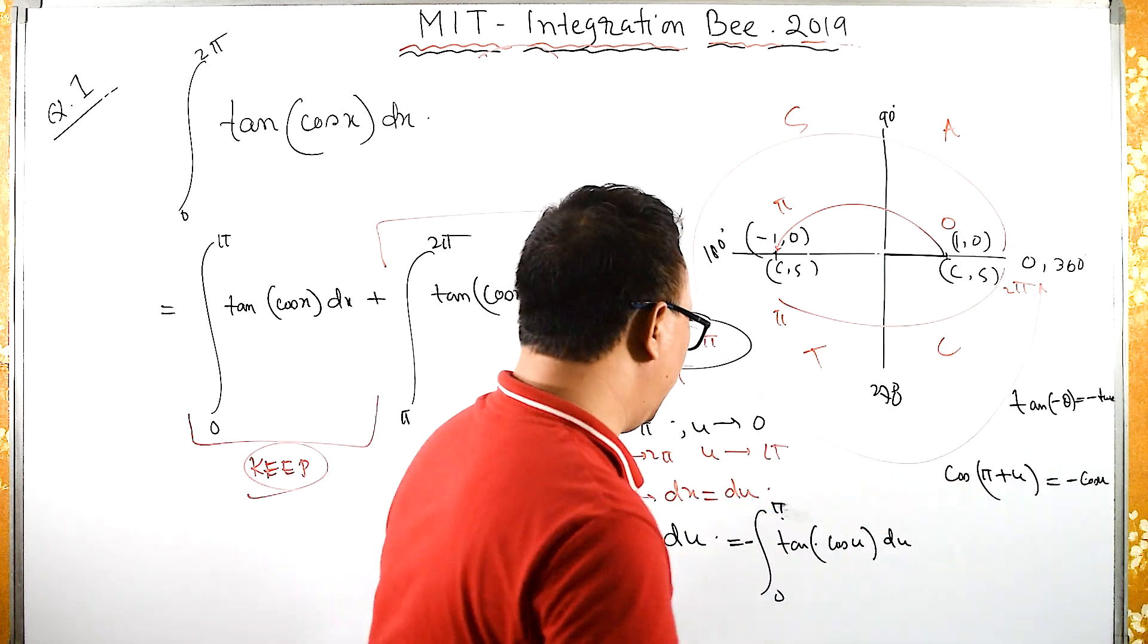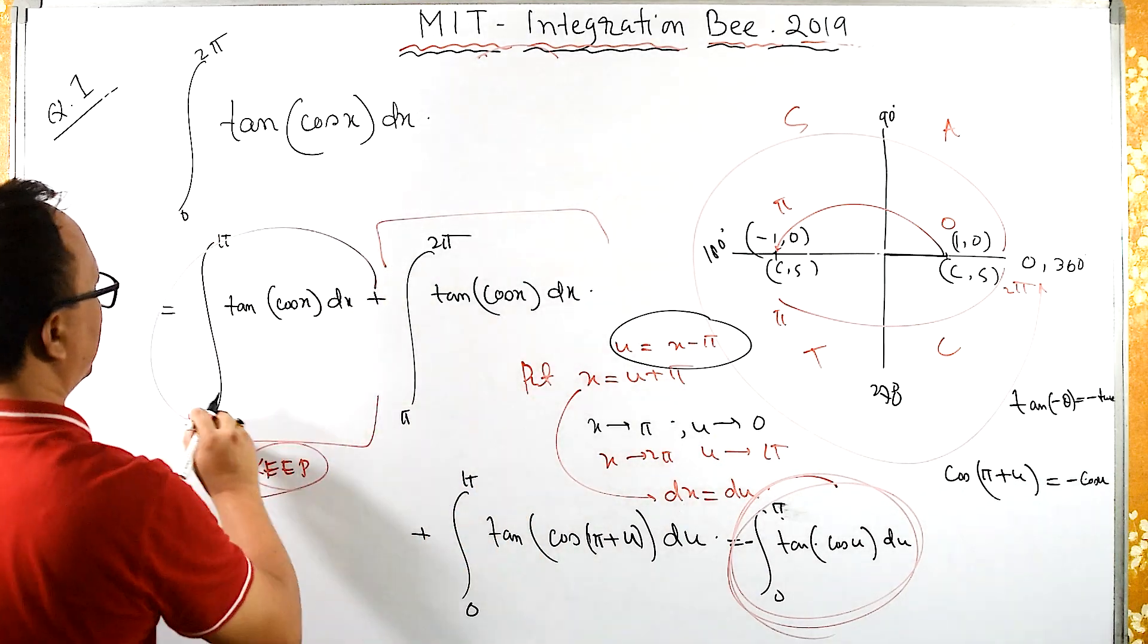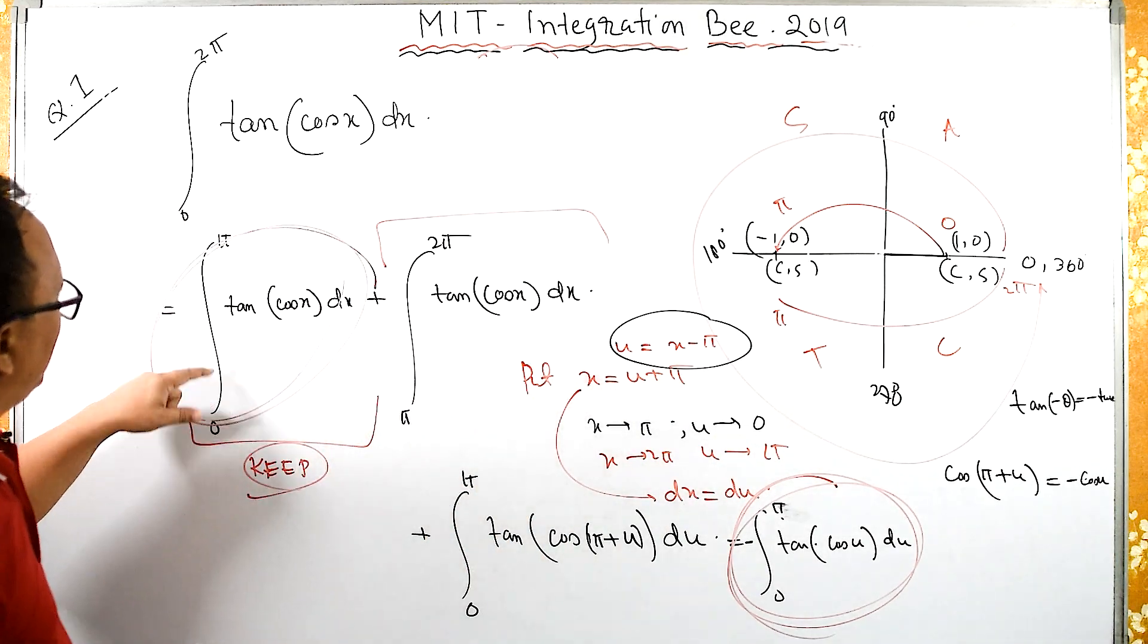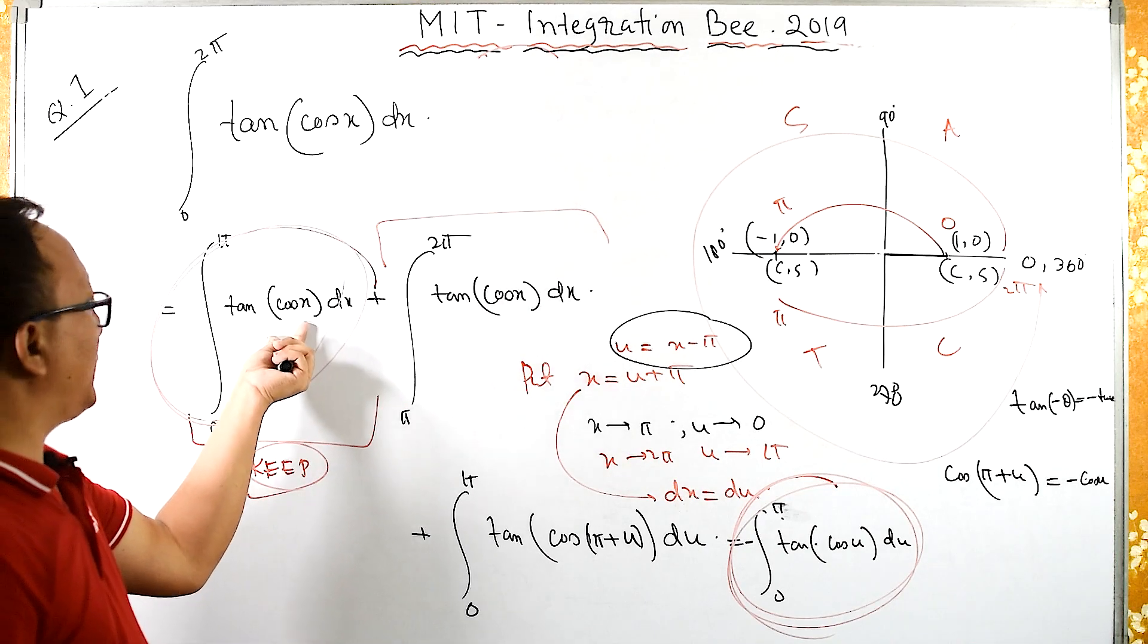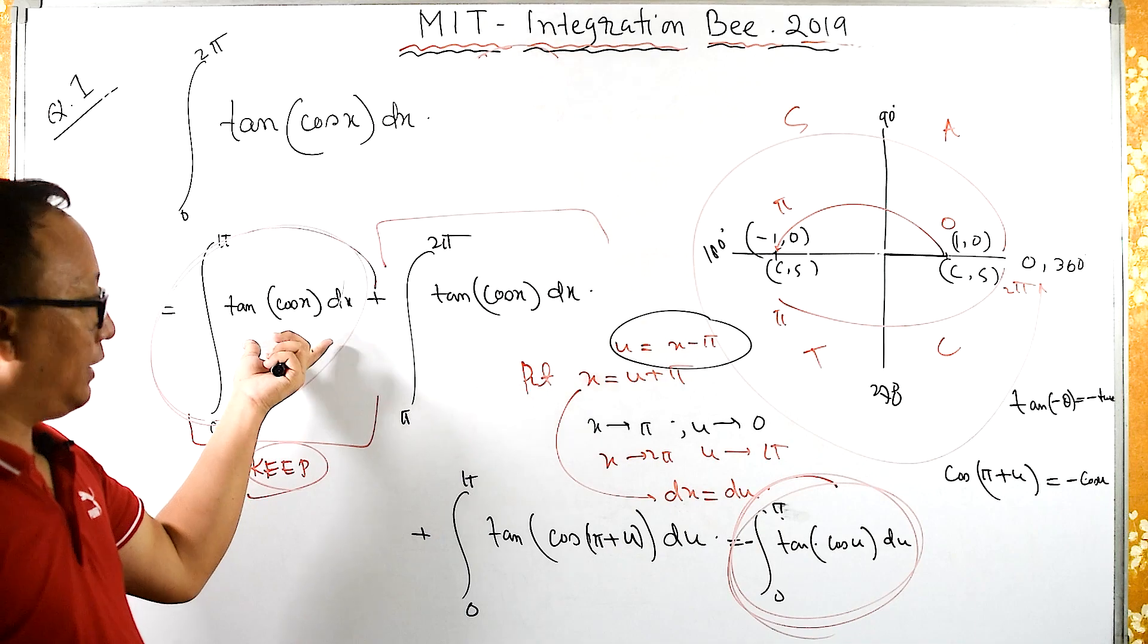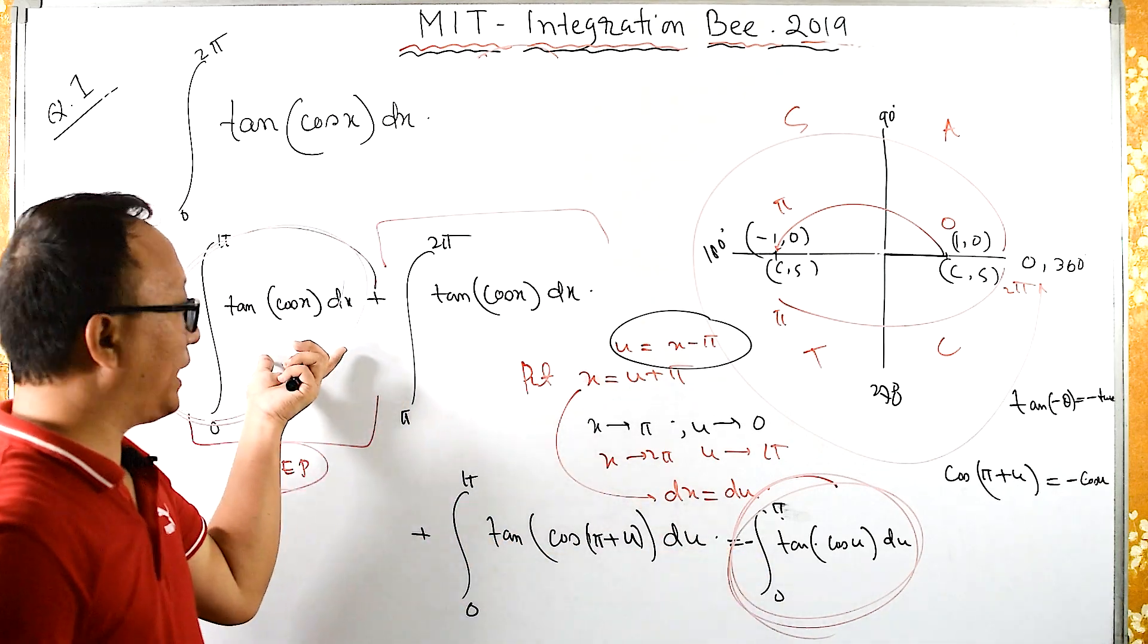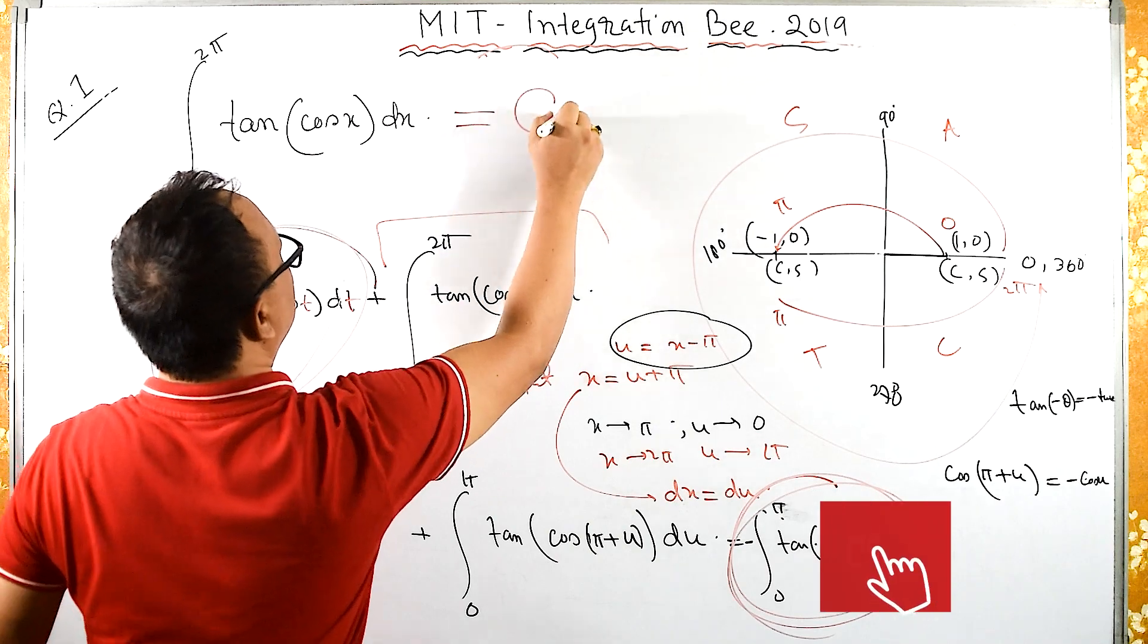Therefore we have: integral from 0 to π of tan(cos x) dx minus integral from 0 to π of tan(cos u) du. These two get cancelled, therefore the value of this integration becomes zero.